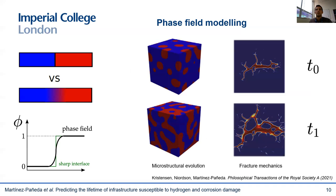Phase field methods are becoming notably popular in many areas of science and engineering. Two of these areas are microstructural evolution and fracture mechanics. As you can see in the slide, very complex interfacial phenomena can be simulated, such as branching and merging of cracks and the nucleation of cracks from secondary sites. I will also show how this method can be used to track the evolution of the corrosion front. The possibility of simulating interface evolution, combined with coupled multi-physics modeling, forms the basis for using computers to predict environmental assisted failures and to extend virtual testing to civil engineering infrastructure.